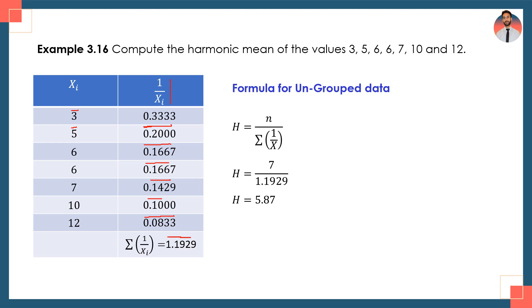Now put the values into the harmonic mean formula for ungrouped data. The number of values n = 7, and summation of 1/x = 1.1929. So harmonic mean = 7 divided by 1.1929, and the answer is 5.87. This is the harmonic mean for ungrouped data.